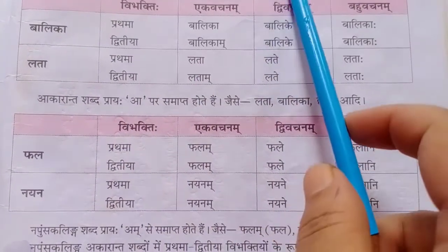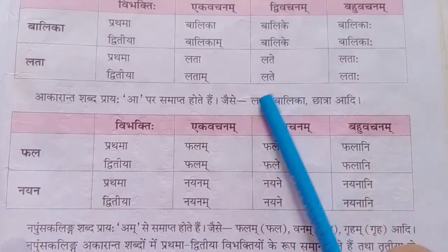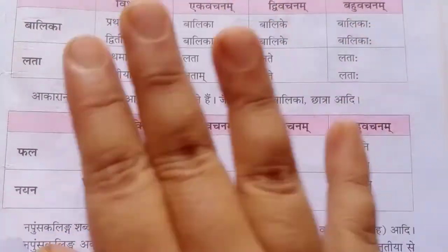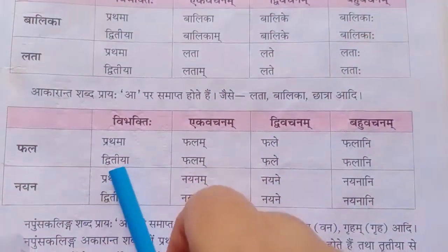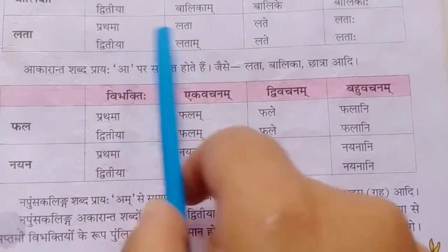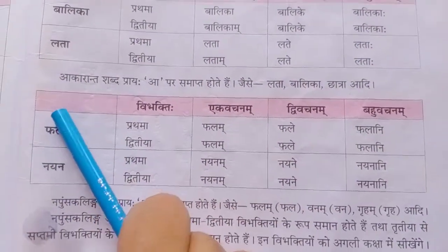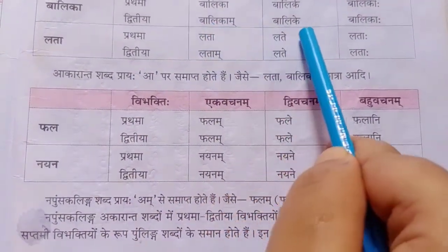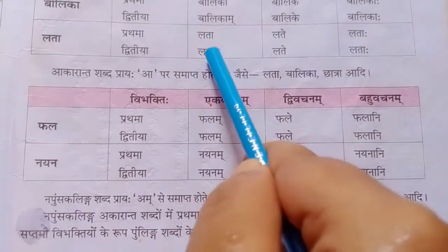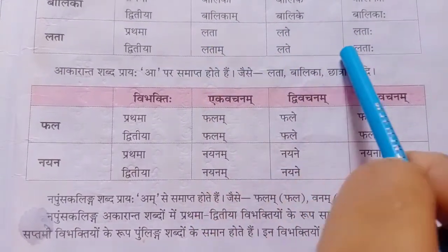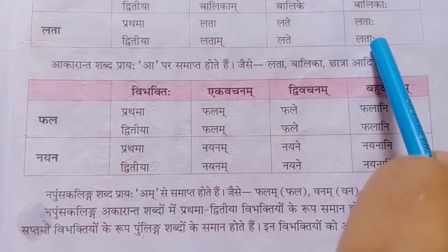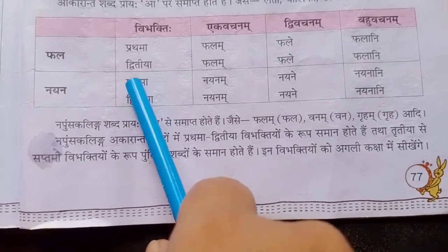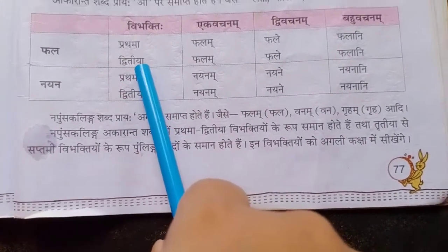As same as this, Dvivachan means two things, and Bahuvachan means more than two — the same pattern will follow. These are all the names (Prathama) and these are the 'to whom' forms (Dwitiya). Now the next one is neutral gender.